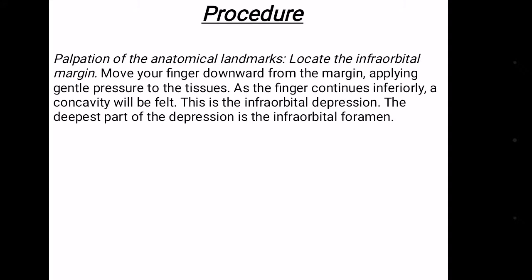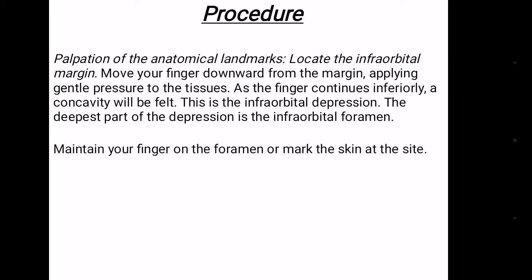For the procedure, draw an imaginary line between the mesial aspect of the pupil to the angle of the mouth. Along this imaginary line, move a finger downward from the infraorbital margin, applying gentle pressure to the tissue. As the finger continues inferiorly, a concavity will be felt — this is the infraorbital depression. The deepest part of the depression is the infraorbital foramen. Maintain your finger on the foramen or mark the skin at the site.